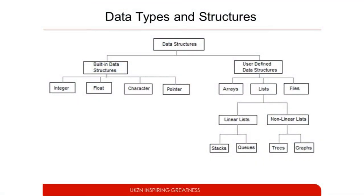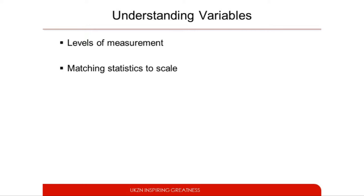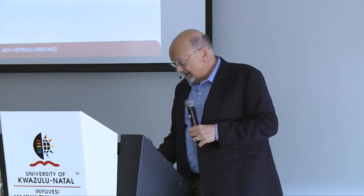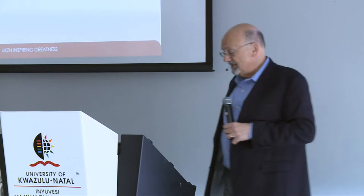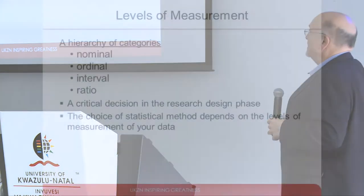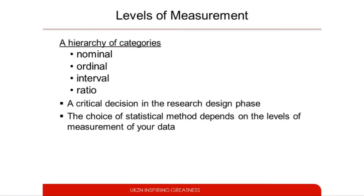These different types of data are related to different types of structures, illustrated on the computer side in terms of how they distinguish built-in from user-defined structures, and the different types having to do with how data is represented and stored. I want to focus most of this time on how the characteristics of the fields — the variables you're using — relate to what you can do with those variables. Those of you who have taken basic statistics courses, this is probably just a refresher: the four distinctions we make about types of variables are nominal, ordinal, interval, and ratio.